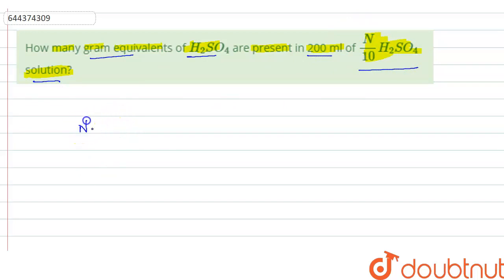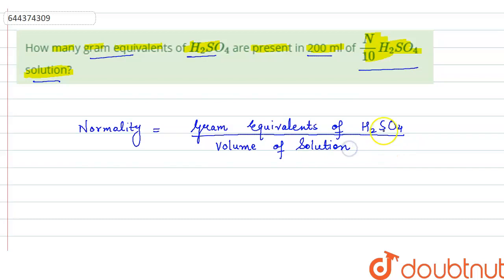Now, we know that normality basically is the number of gram equivalents of solute present in 1 litre of solution. So, here we have solute H2SO4. So, if we write the formula, it will be equal to gram equivalents of H2SO4 divided by volume of solution in litres.